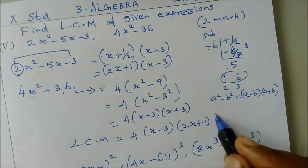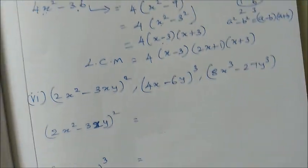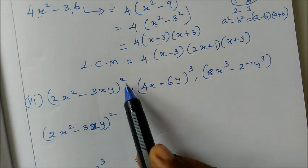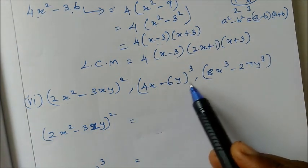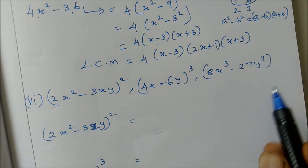2x plus 1 into x plus 3, that's all. The next sum, 6th one: 2x squared minus 3xy the whole squared, 4x minus 6y the whole cube, 8x cube minus 27y cube.